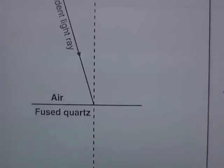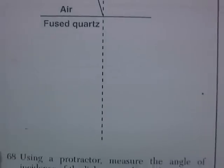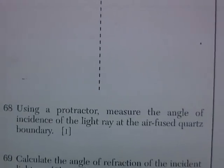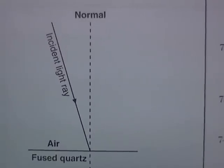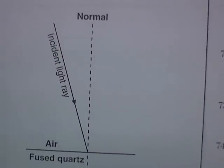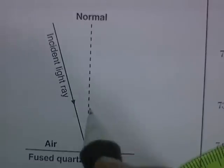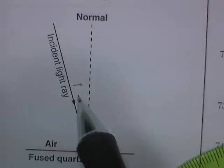Let's see what they want to know. Using a protractor, measure the angle of incidence of the light ray at the air-fused quartz boundary. So we want to know what this angle is.